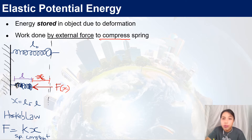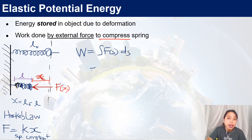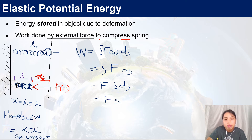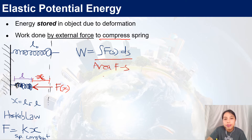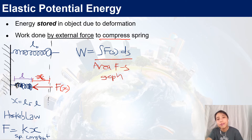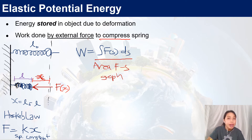Remember earlier we talked about the original form of work done. The original form looks like this: the integral of F·dS. Normally, if F is constant, you can take F out, integrate dS, and get F times S. But if the force is not constant, you're stuck at the integral level. What this squiggly integral means is: find the area under the F–S curve, the F–S graph.